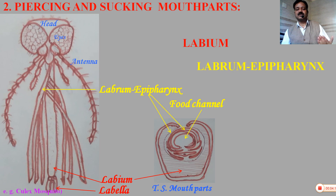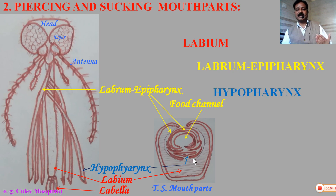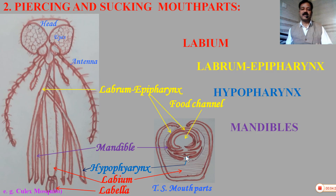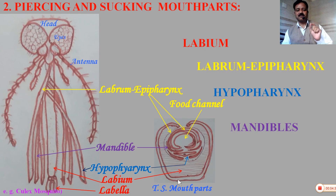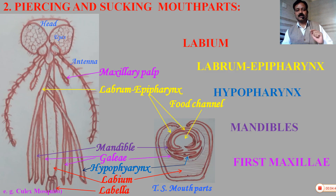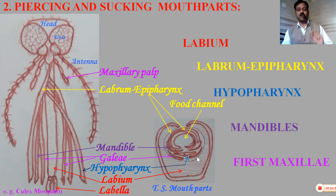There is also the presence of the hypopharynx, which is present at the base of the food channel. Hypopharynx bears the opening of the salivary gland at its base. The mandibles are strong, spear-shaped or pin-shaped structures. All these combine together to form a pin-like structure called the proboscis, so that the proboscis can enter the body of the host. The maxilla consists of well-developed galea, which are also pin-like structures that give a good grip to the proboscis. All these structures combine together to form the entire proboscis.